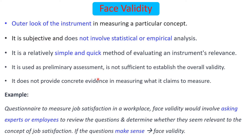Face validity is the weakest form of validity and does not provide concrete evidence that an instrument measures what it claims to measure. For example, a questionnaire to measure job satisfaction would involve asking experts or employees to review the questions and determine whether they seem relevant to the concept. If the questions make sense to the respondents, face validity is established; if not, face validity has failed.